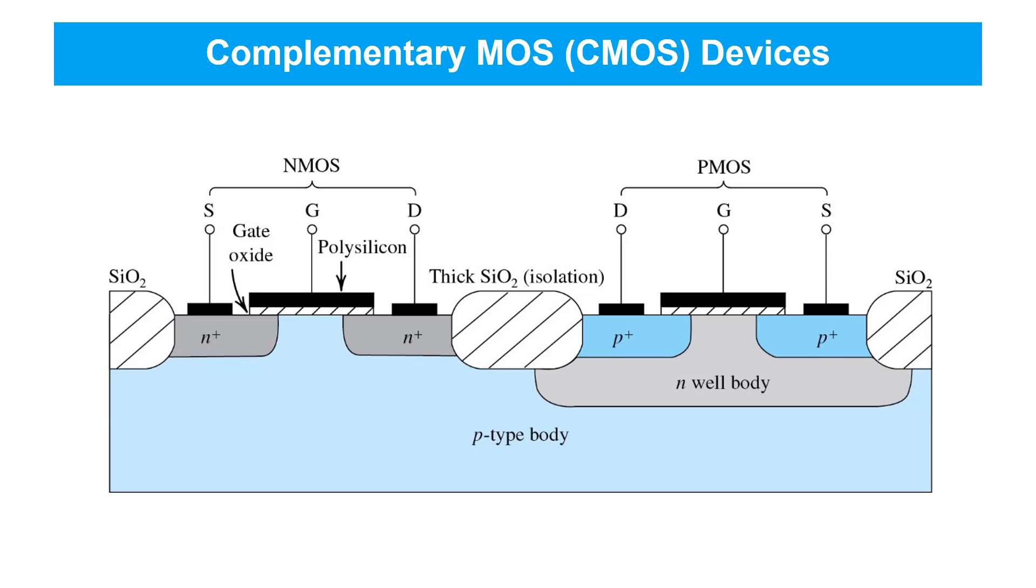Since so many useful circuits can be made by combining both NMOS and PMOS devices, the most popular manufacturing technology for making semiconductor devices is the so-called complementary MOS or CMOS technology. Using this technology, both NMOS and PMOS devices can be fabricated side-by-side in a shared silicon substrate, shown here as a typical cross-section.